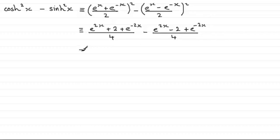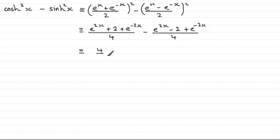And again this is all over 2 squared which is 4. Simplifying this: we've got e to the power 2x minus e to the power 2x — that's 0. We've got 2 minus minus 2 which is 4. And then we've got e to the power minus 2x minus e to the power minus 2x — so that's 0. This is all over 4, so we've got 4 over 4 which is clearly 1.